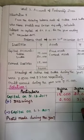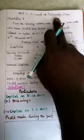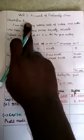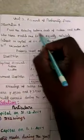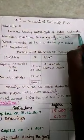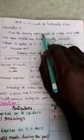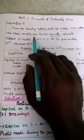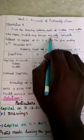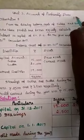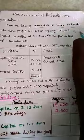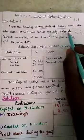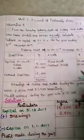Hello students. 12th Accountancy, Unit 3, Accounts of Partnership Forms. Illustration 8: From the following balance sheets of Subha and Sudha, who share profits and losses equally — so their profit sharing ratio is 1:1, meaning 1/2 for Subha and 1/2 for Sudha — calculate interest on capital at 6% per annum.